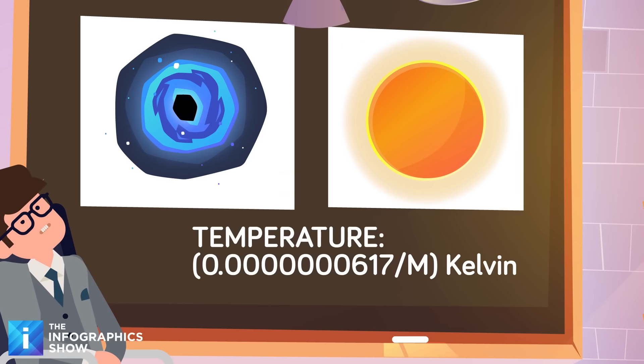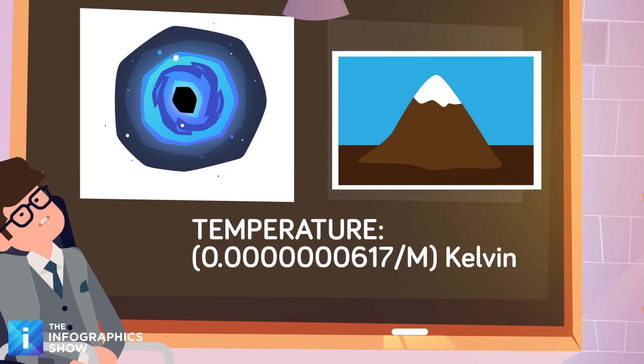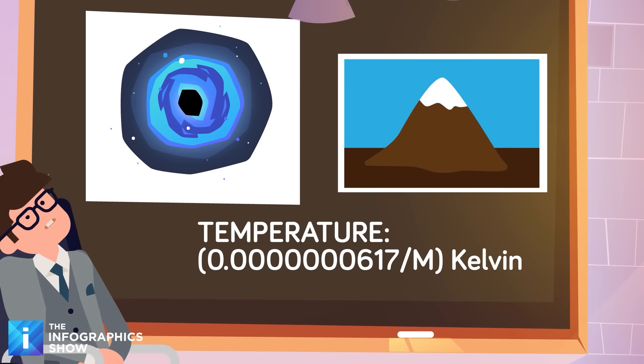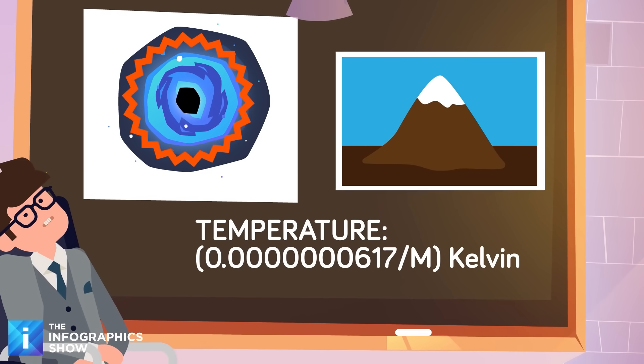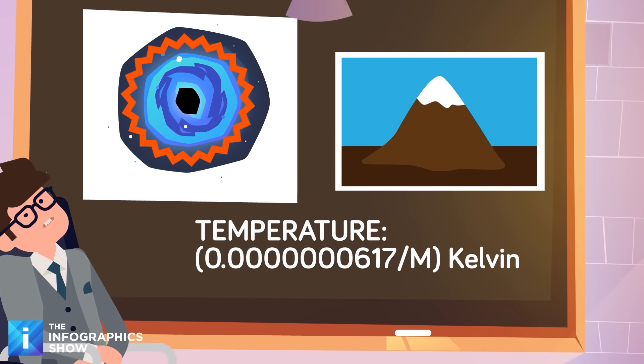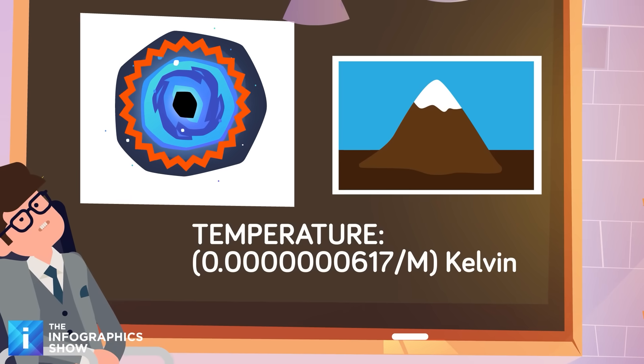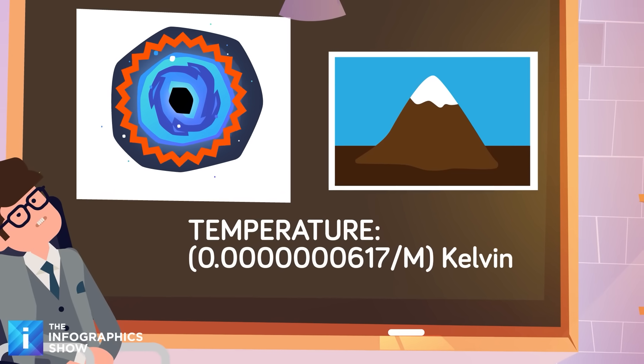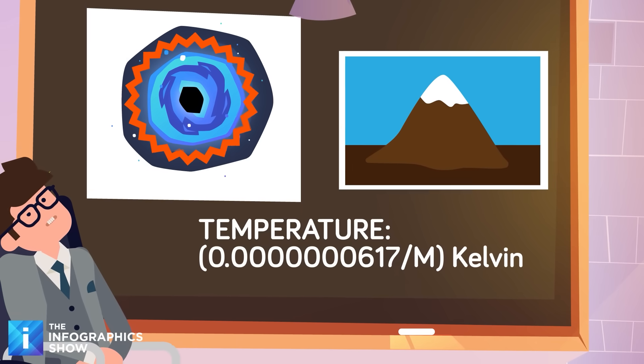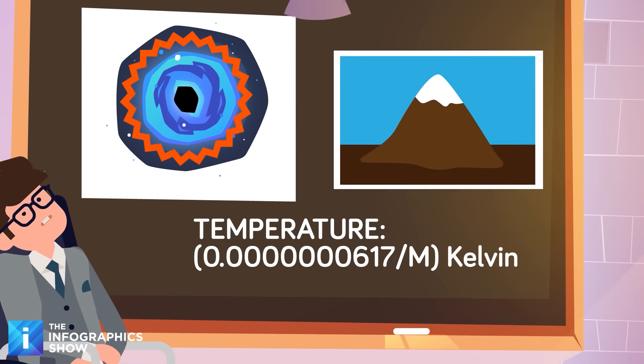But, shrink that black hole down to the mass of a mountain, and then suddenly it's as hot as our sun's surface. That's the principle of Hawking radiation in action. Make it the mass of a car, and it becomes hot enough to vaporize any material we know of. A black hole with the mass of a paper clip would have a temperature of billions of degrees.